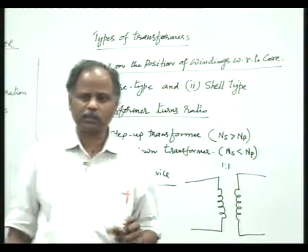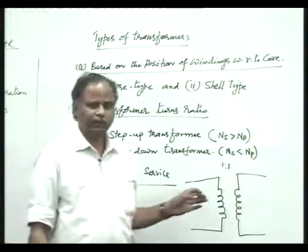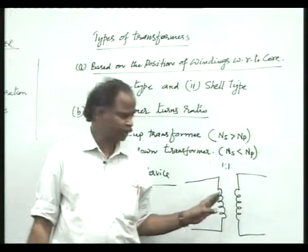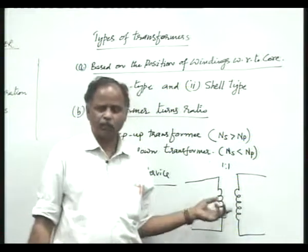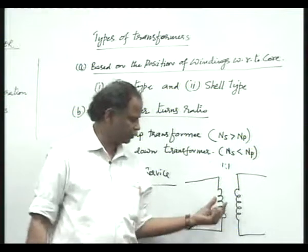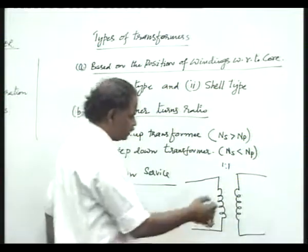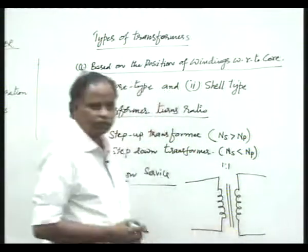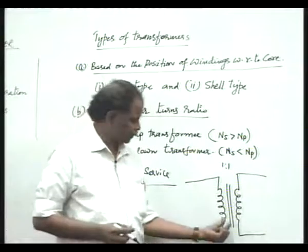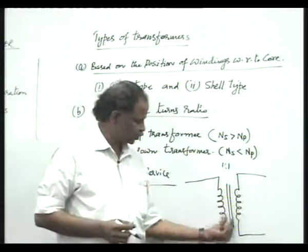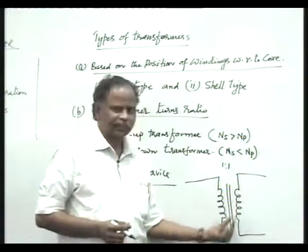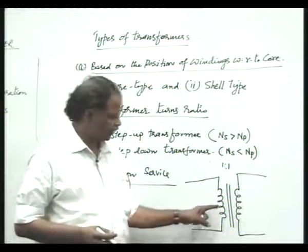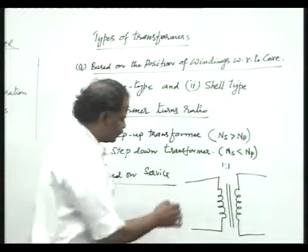This particular transformer, when you have the same turns ratio, is called the isolation transformer. Especially for TV circuits, when you want to isolate the TV circuit from the main supply voltage for servicing purposes, we use this isolation transformer, which is basically a 1-to-1 transformer. The two vertical lines shown between the two coils in the symbol represent the core.